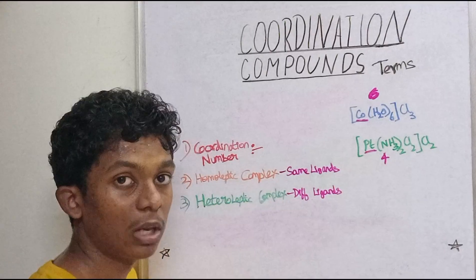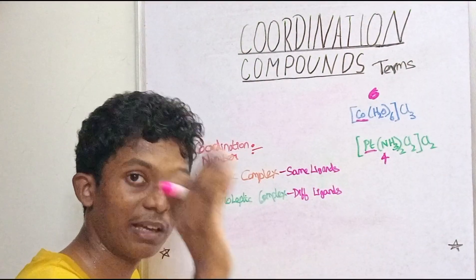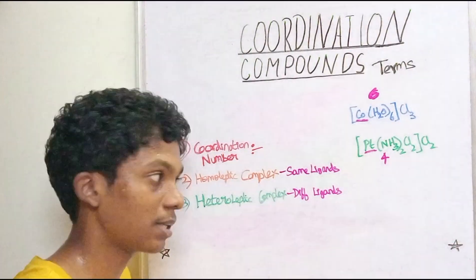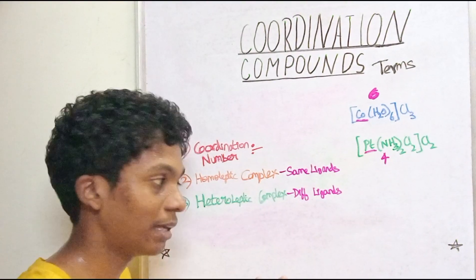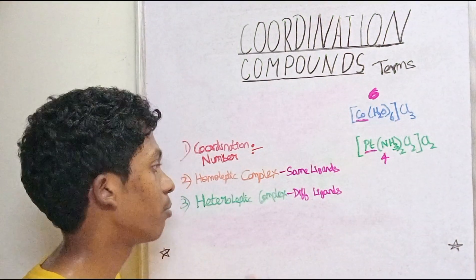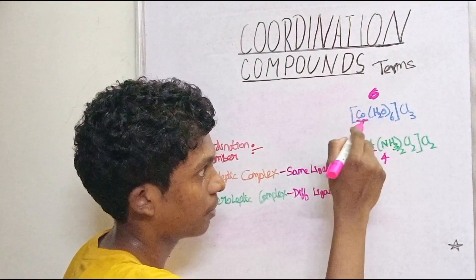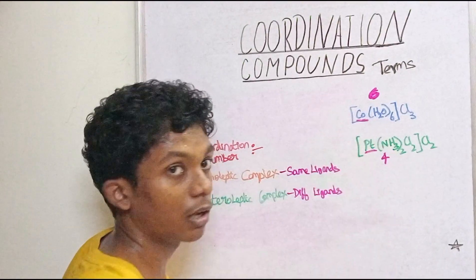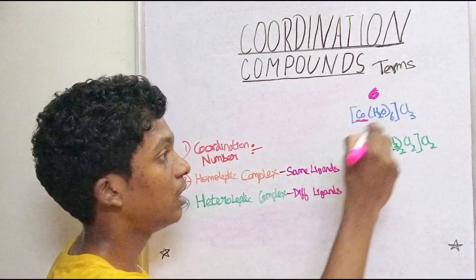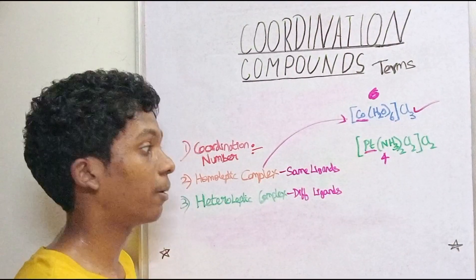The next concept is the Homoleptic Complex. In a homoleptic complex, the central metal atom has only one type of ligand — same ligands throughout. This was a question in 2023 exams. All ligands are the same, so this is a homoleptic complex.